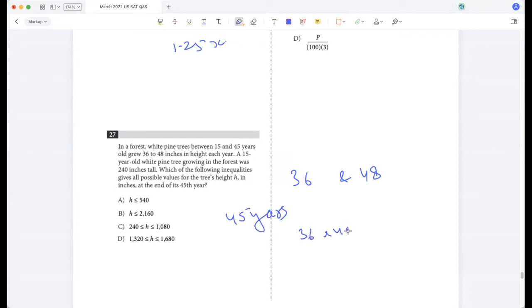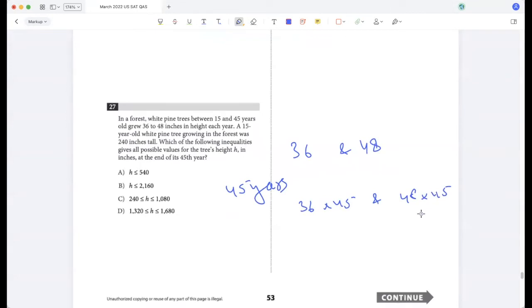It was 240, so the possible values are between 240 plus 36 times 45 and 240 plus 48 times 45, right? So the only possibility then is option D.